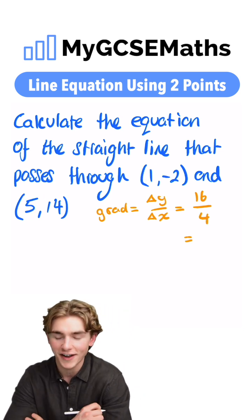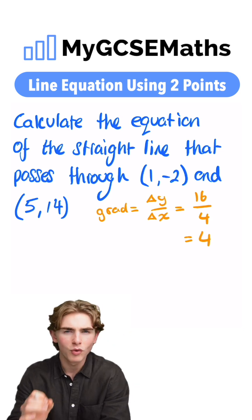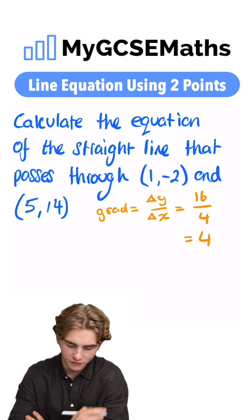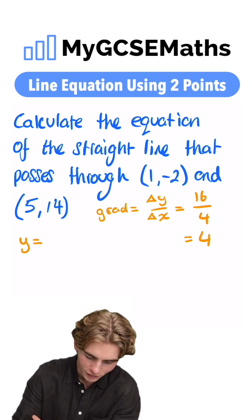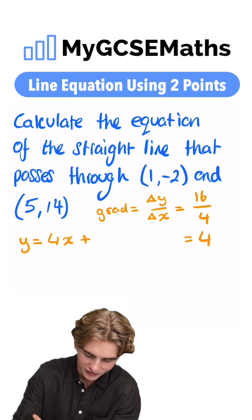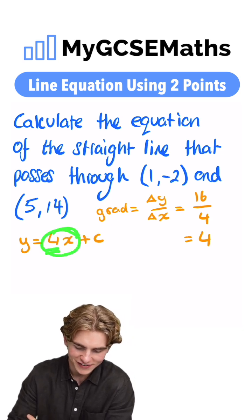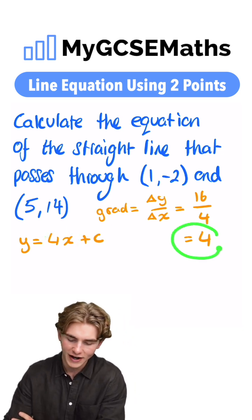So we can work out our gradient: 16 divided by 4 is going to be 4. So we know the first part of the equation of this line. We can say that y is equal to 4x plus c. That's because m, the number next to the x here, is the gradient and we've worked out that that is 4.